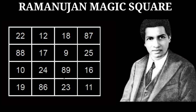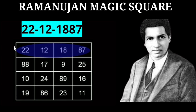The first interesting fact is the numbers written along its first row — these are the date of birth of Ramanujan. The date of birth of Ramanujan is 22 December 1887, so he wrote the date of birth as 22, 12, 18, 87 as the numbers in the first row.